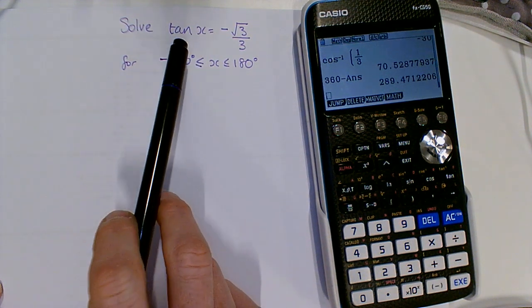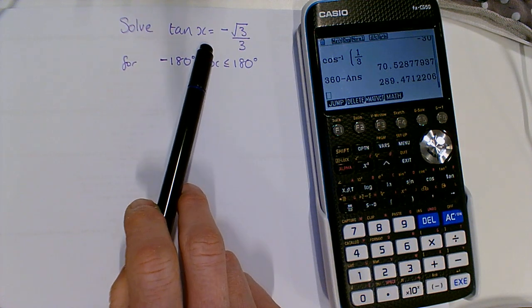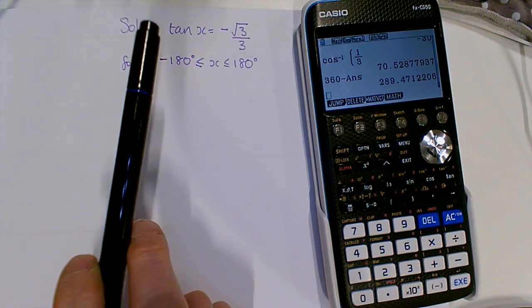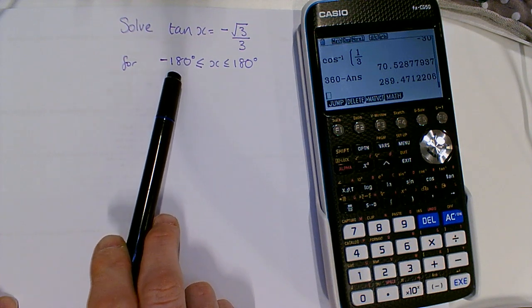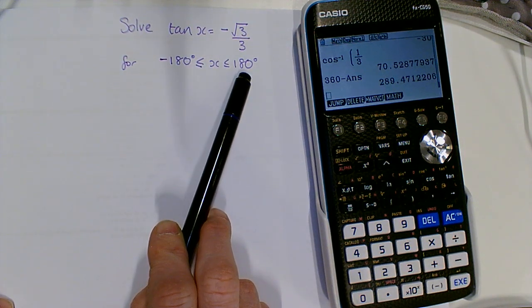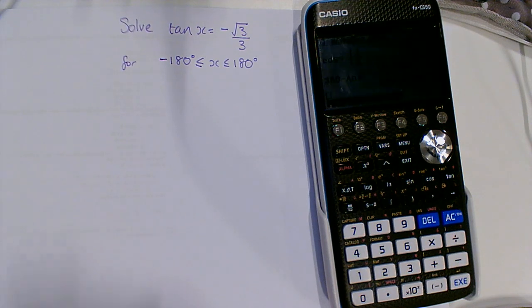I'm going to solve a nice basic trig equation: tan x equals minus root 3 over 3, and I want to find all the solutions between minus 180 and 180 degrees. I'm going to use CAST and also the calculator to find my answer.